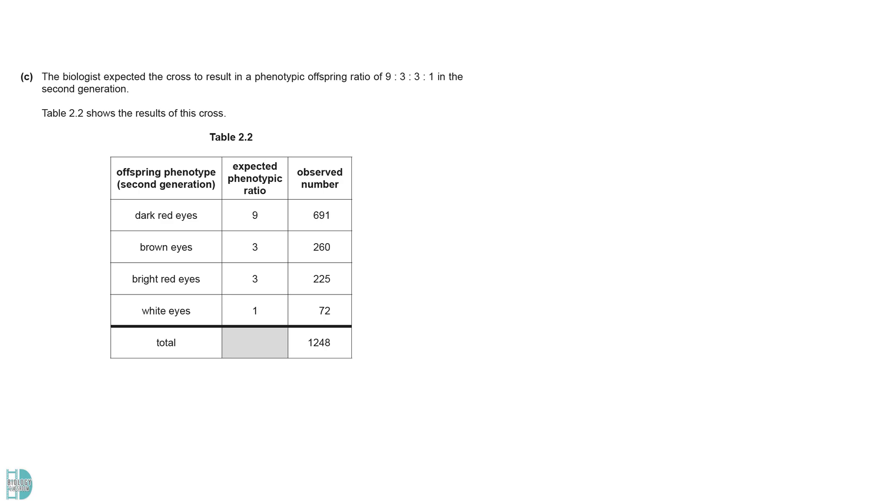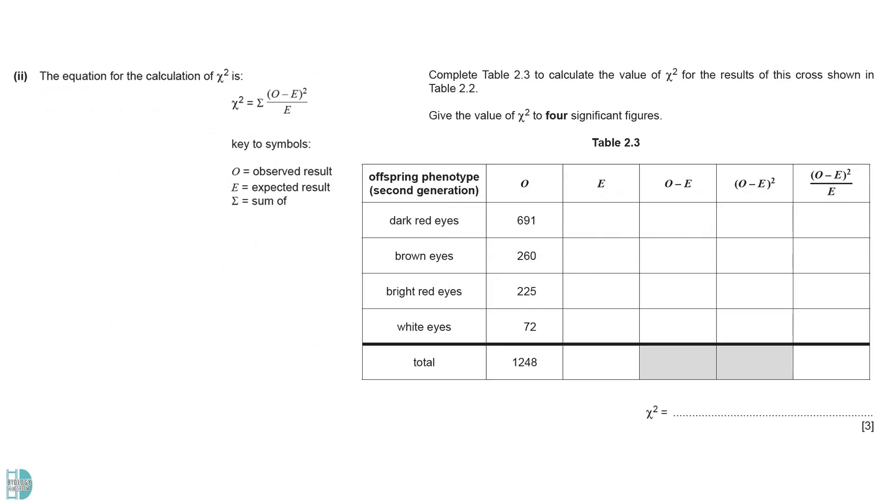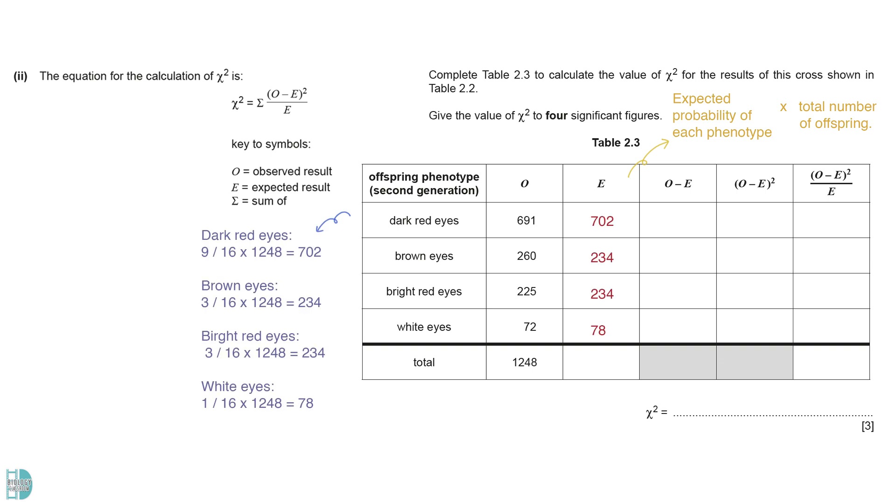Table 2.2 shows the expected ratio and observed values from the cross. The null hypothesis for a chi-square test is always the same. We assume that there is no significant difference between the observed and expected results. Part 2 wants you to complete the table and calculate the chi-square value. The expected value can be calculated by multiplying the expected probability of each phenotype by the total number of offspring. Then, use the formula to calculate for each phenotype. Sum the values and you will obtain the calculated chi-square value.